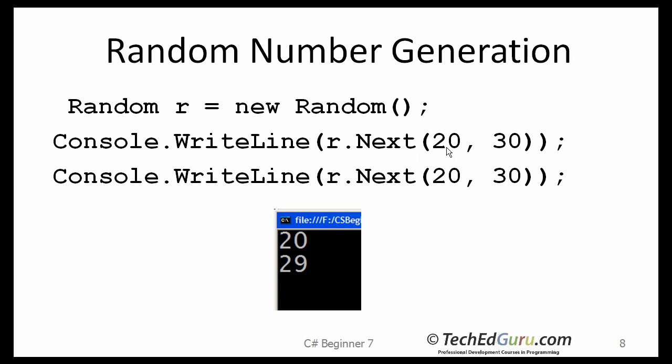In this case, I have provided 20 through 30. What this does is, it gives me a random number between 20 and 29. When you run this example, you will get different random numbers, but they would always be between 20 and 29.